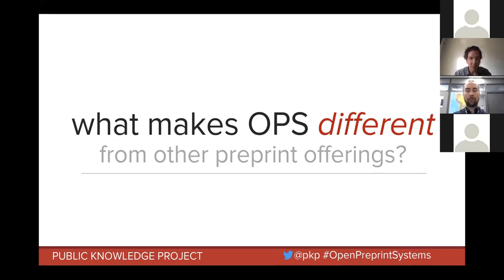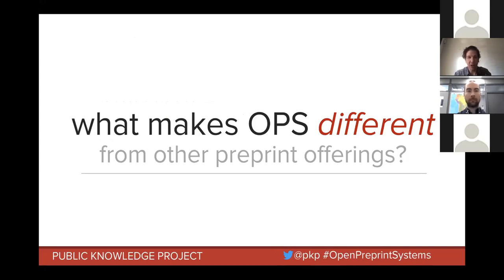We've seen preprints rise. Some preprint systems have been around for a long time, there are new players in place, and new fields are starting to preprint now. We've seen the rise of all the new disciplinary preprint systems out there, so there's clearly an interest in having preprints from around the scholarly community. So why was new preprint software necessary? What makes Open Preprint Systems from PKP different from other software and platforms out there today?